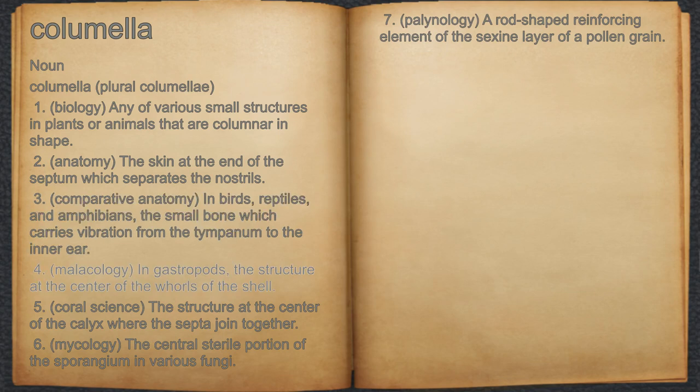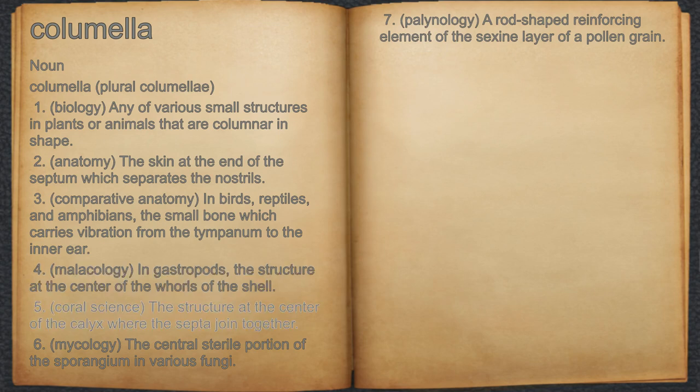4. Malacology: in gastropods, the structure at the center of the whorls of the shell. 5. Coral science: the structure at the center of the calyx where the septa joined together.